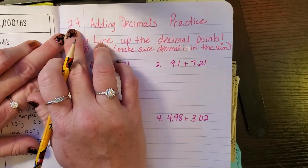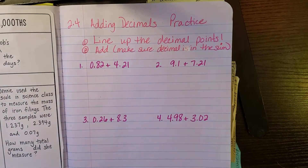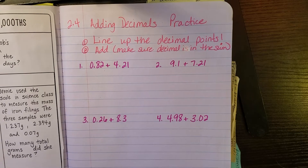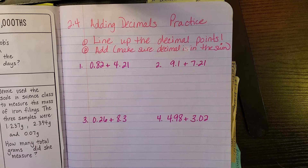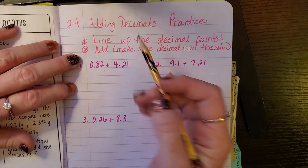This is Topic 2, Lesson 4. Your purpose for learning is: I can add decimals using place value and properties of operations. Your purpose for learning is to learn how to add decimals.